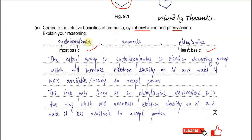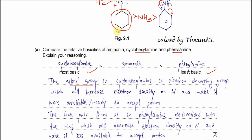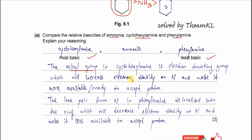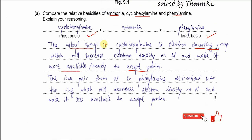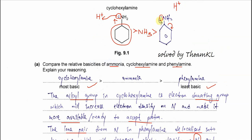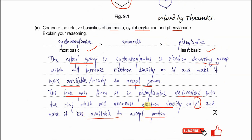Cyclohexylamine is the most basic because the alkyl group is electron-donating, which increases electron density on the nitrogen, making it more readily available to accept a proton. Phenylamine is the least basic because the lone pair on nitrogen delocalizes into the ring, decreasing electron density on nitrogen so it is less available to accept a proton.